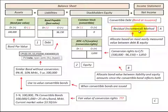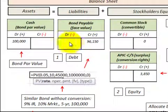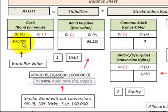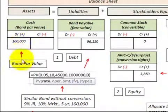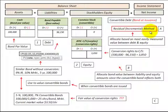We're going to start out with the residual or incremental method and go through an example. I want to point out that I'm using the bond par value as our basis for allocating the debt and equity portion of this convertible bond. If the bond was issued for a greater or lesser amount than par value, you would substitute that in the equation instead. This residual or incremental method is used when we do not know both the debt portion and the equity portion.